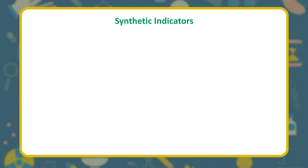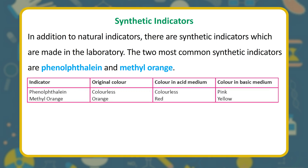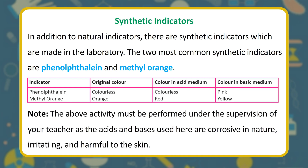Synthetic indicators are made in the laboratory. The two most common synthetic indicators are phenolphthalein and methyl orange. Phenolphthalein is colorless in acid and pink in base. Methyl orange is orange in its original color, red in acid medium, and yellow in basic medium. Note: activities using acids and bases must be performed under the supervision of a teacher, as the acids and bases used are corrosive and harmful to the skin.